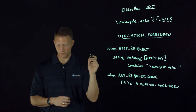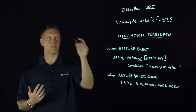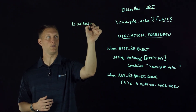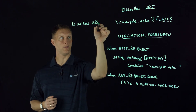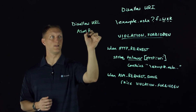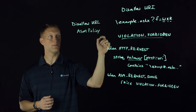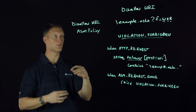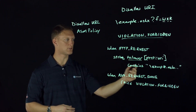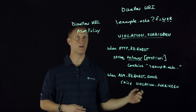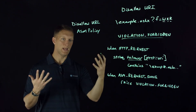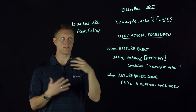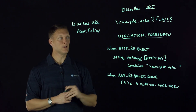One other thing to mention: in an ASM policy there's a concept of disallowed URLs. In an ASM policy you can actually have a list of disallowed URLs directly in the policy itself. So rather than having to write an iRule for all this, you could just include the actual URL in the policy. If anyone tries to access that URL, based on the disallowed URL list, they can't get to it either. There's always more than one way to solve a problem.